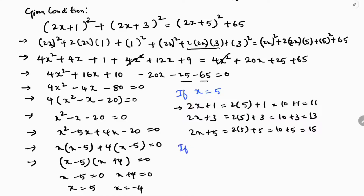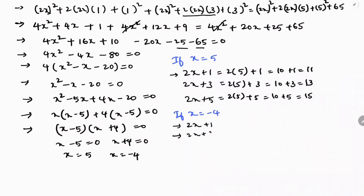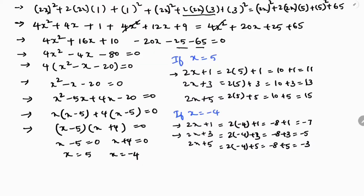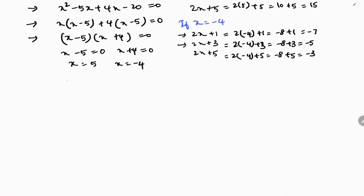Case 2: if x = −4, then 2(−4)+1 = −7, 2(−4)+3 = −5, and 2(−4)+5 = −3. So the three consecutive odd numbers are −7, −5, −3.